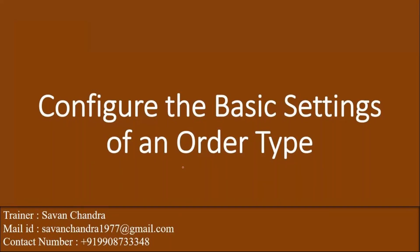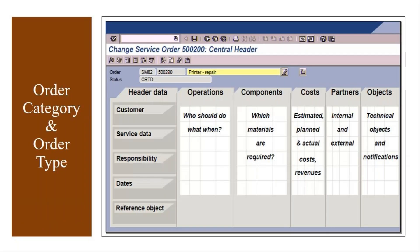Whenever a new order type is created, we will see what settings we need to do in the system one by one. Basically, whenever we create a service order, it will have the header data, operations, components, costs, partners, and object information. All these things we have covered in our regular business process sessions.